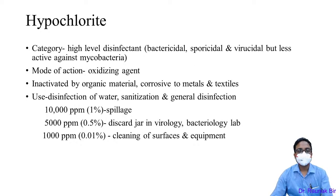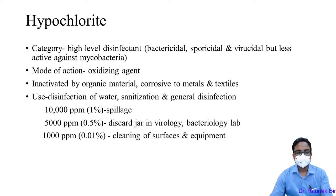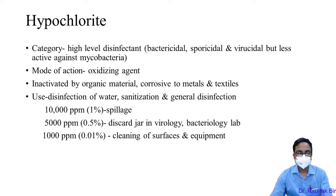Hypochlorites are high-level disinfectants that are bactericidal, sporicidal, virucidal, and less active for Mycobacterium. The mechanism of action is as an oxidizing agent, causing free radical production and destruction of the pathogen; they inactivate organic material but are corrosive to metals and textiles. Use: disinfection of water, sanitation, general disinfection of surfaces and spills. For spillage, use 1% (10,000 ppm) — the commercial product is 4–5% (40,000–50,000 ppm) and must be diluted.